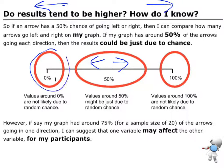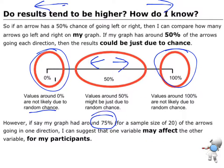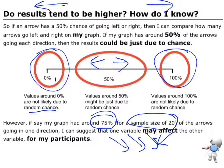Whereas if I'm getting values right down the bottom or right up the top — so close to 0 or 100% — then that value isn't very likely to happen just due to random chance. So what we're going to do is aim for a cutoff of around 75%, and that's based on a sample size of 20. If I have 75% of my arrows going in one direction, then that's enough evidence that we might have an effect on our variable.